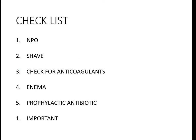The patient has to be NPO (nil per oral) for at least six hours. The patient should have good shaving from the entire abdomen to the mid-thigh. The patient should not be on any anticoagulants like Heparin or Enoxaparin. Enoxaparin has to be stopped — it is better to stop at least five days before the procedure; if it is Heparin, 24 hours before the procedure.